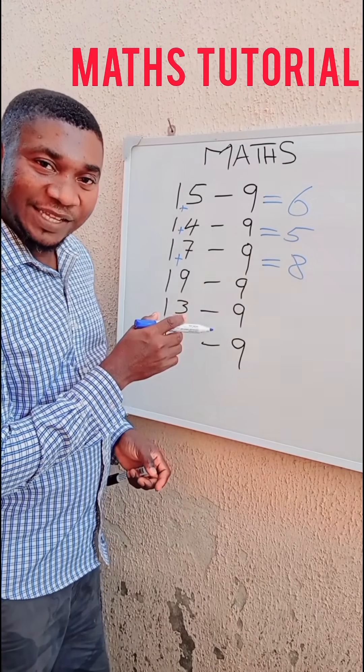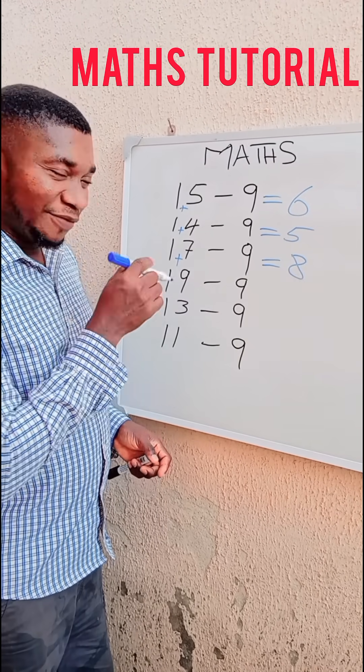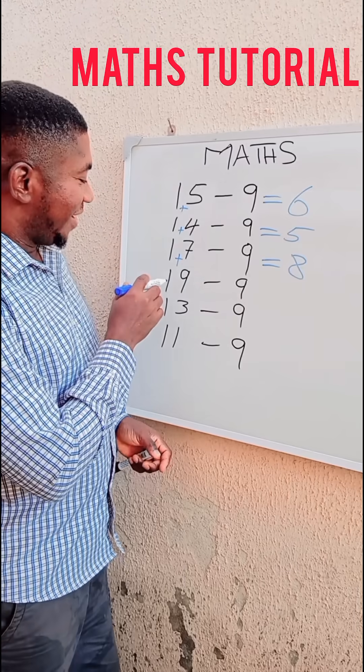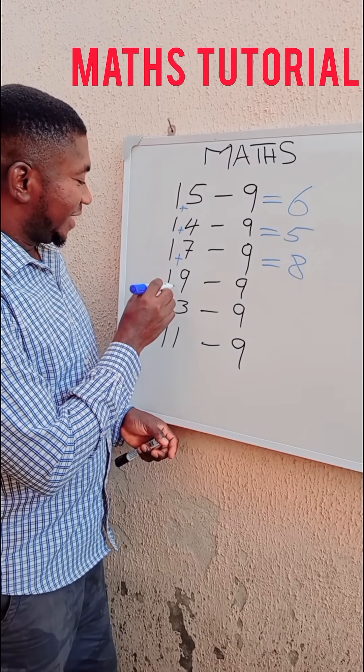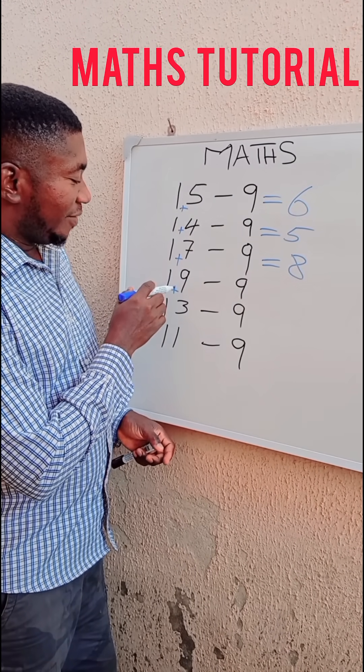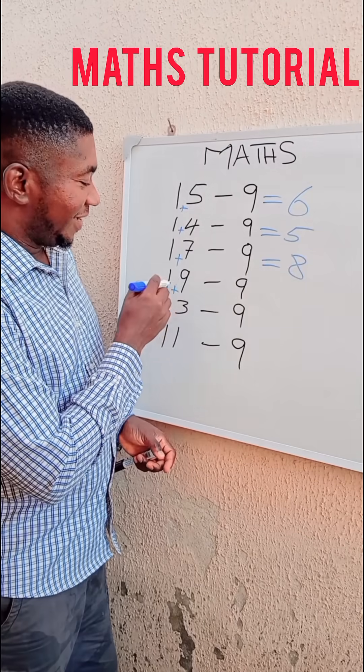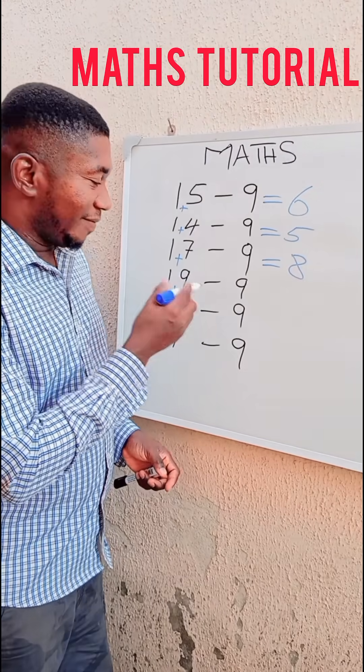Here now we have 19 minus 9. Instead of you to crack your brain and stress yourself, just add up. Put the plus sign. 1 plus 9 is 10. It's the same thing as 19 minus 9 is 10.